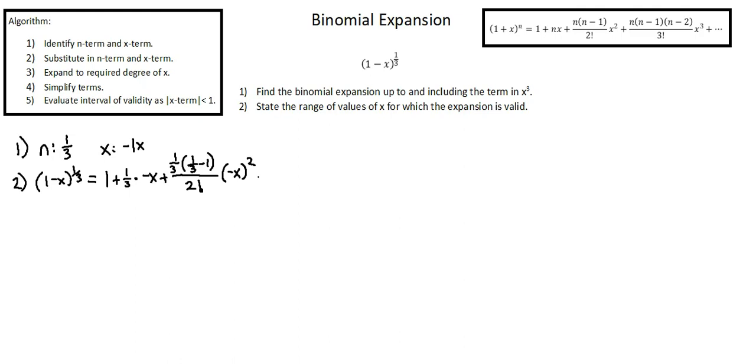Next term, and we want to keep going. Notice that our requirement in this example is up to and including the term in x^3, so we need one more term. Plus the following term has a numerator of n(n-1)(n-2), which is 1/3 times (1/3 - 1) times (1/3 - 2). In the denominator, 3 factorial, multiplied by (-x)^3. Notice that we have also completed Step 3. We've gone out to the required final term.